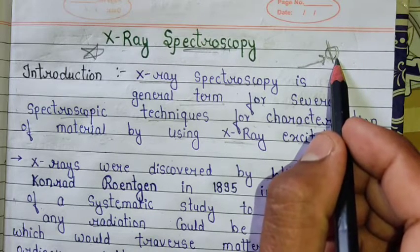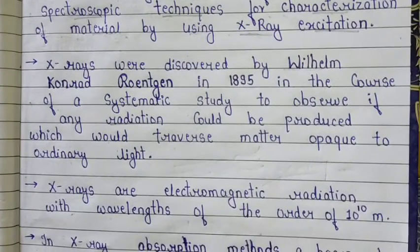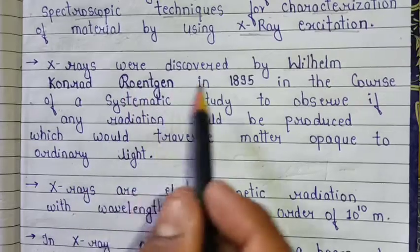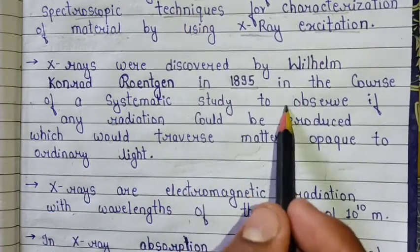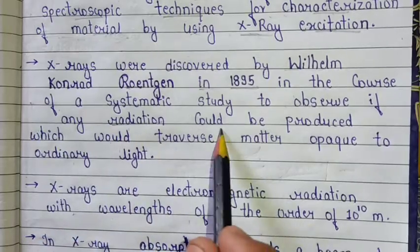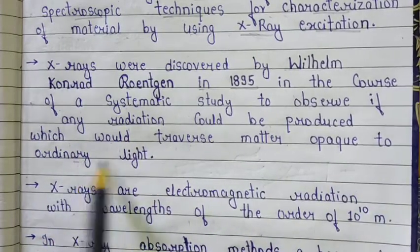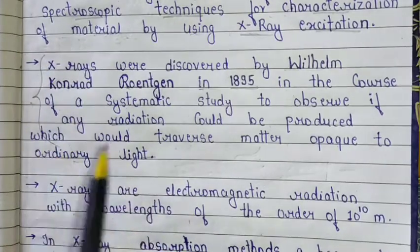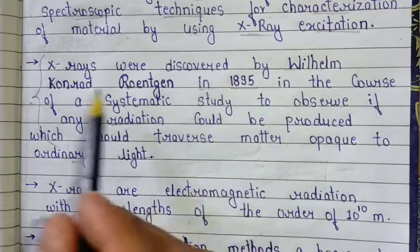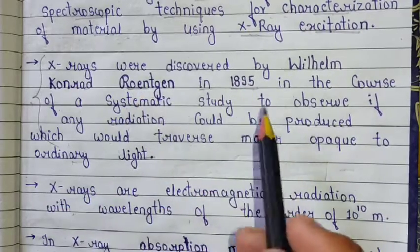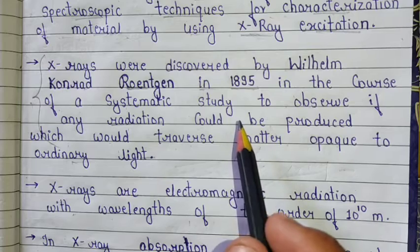X-rays were discovered by Wilhelm Conrad Röntgen in 1895 in the course of a systematic study to observe if any radiation could be produced which would traverse matter opaque to ordinary light. X-ray radiations were discovered by Röntgen in 1895 during this systematic study.